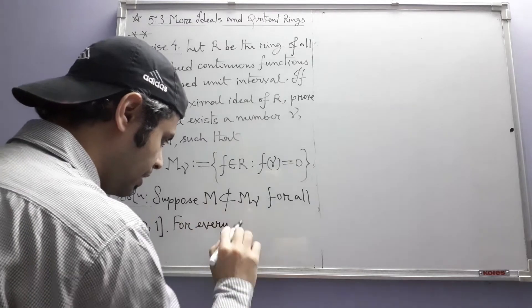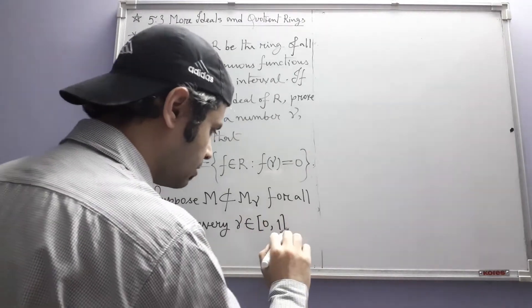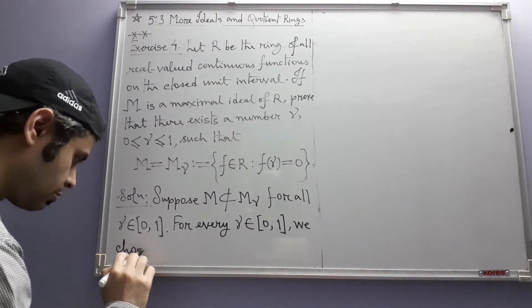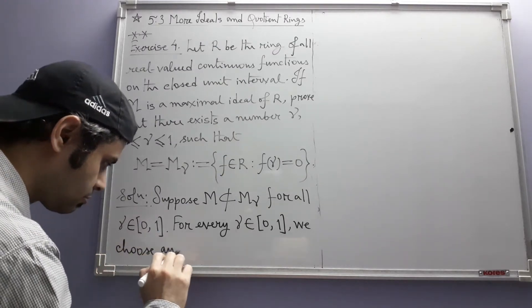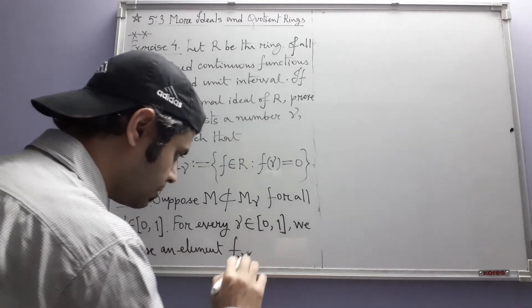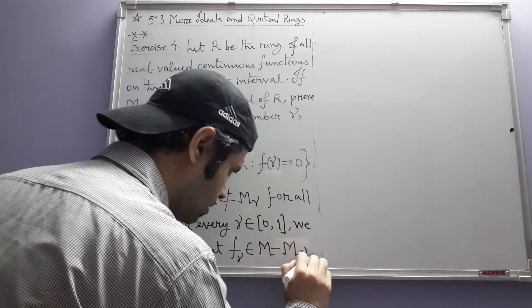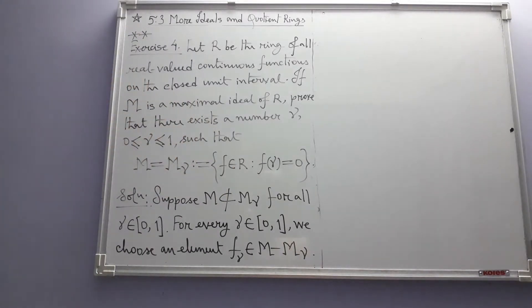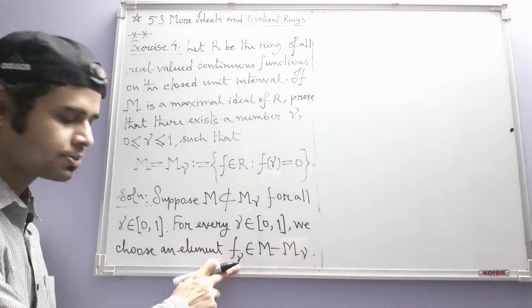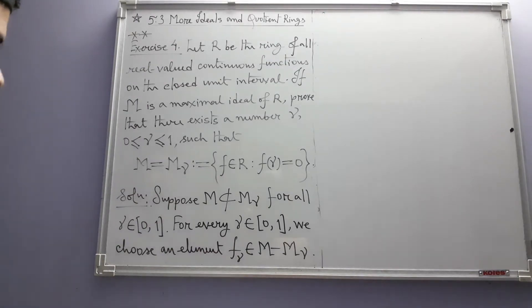For every gamma belonging to [0,1], we choose an element f_gamma belonging to m minus m_gamma. The fact that this choice depends on gamma is denoted by putting a subscript gamma with f.